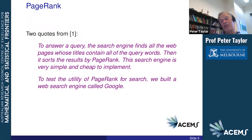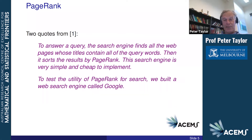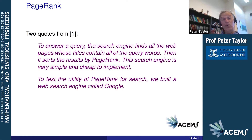Whenever I write in purple, it's a quote from the paper. So the first thing — it's about a search engine. When you enter a query for a particular subject, the search engine has to find all the relevant web pages. But what Google did when it first started was something a little bit more than that. As the authors say: 'To answer a query, the search engine finds all the web pages whose titles contain all of the query words. Then it sorts the results by PageRank.' So it finds relevant pages matching the query words, but then ranks them according to the PageRank algorithm.